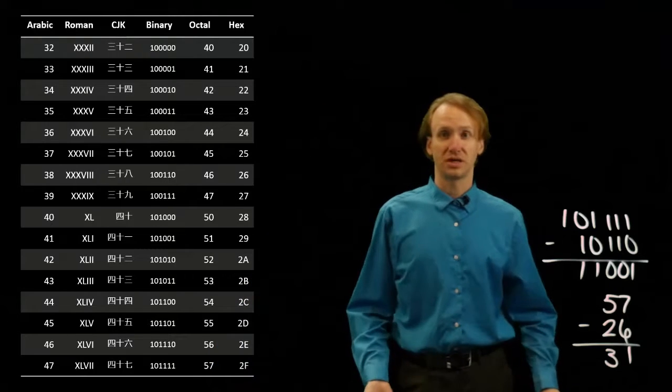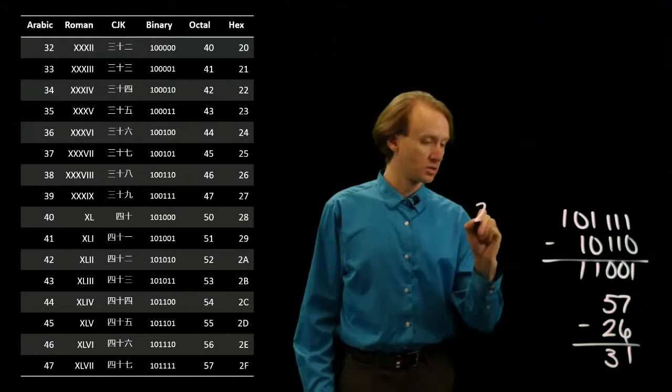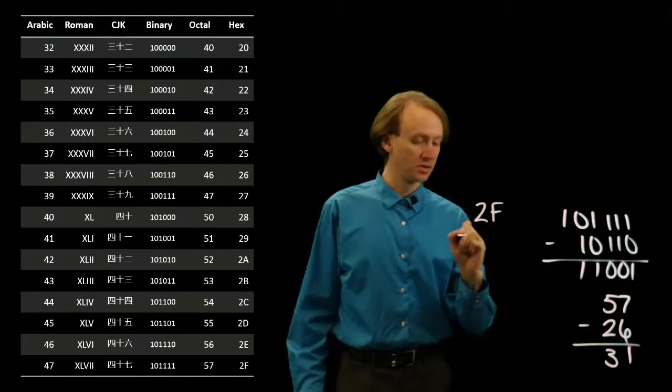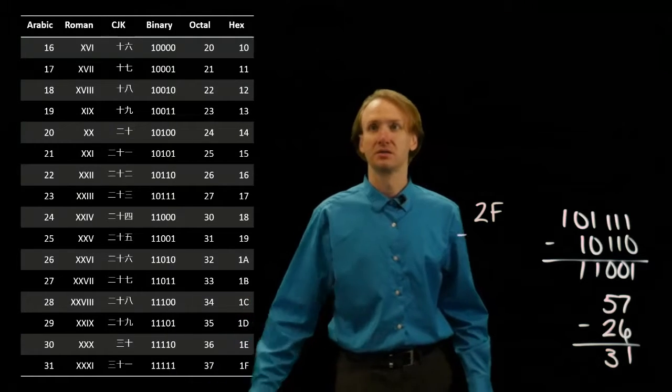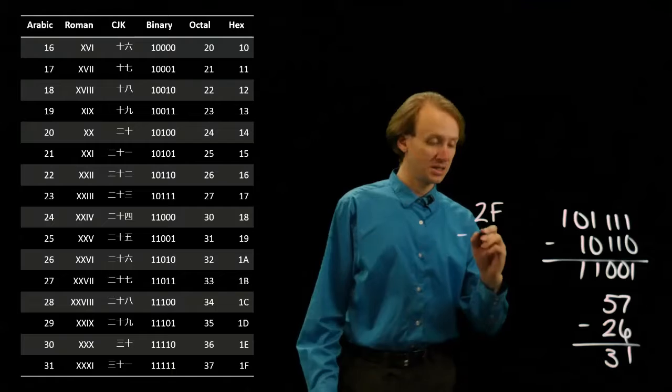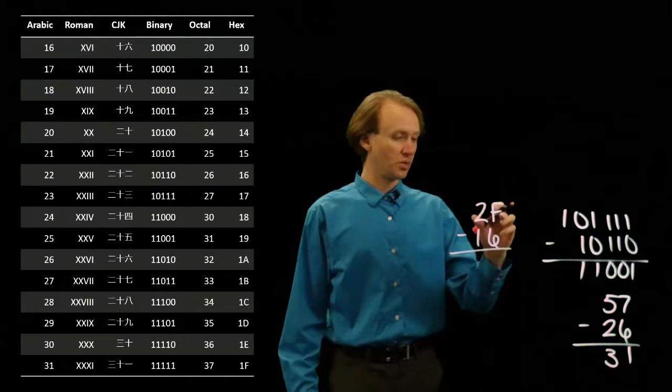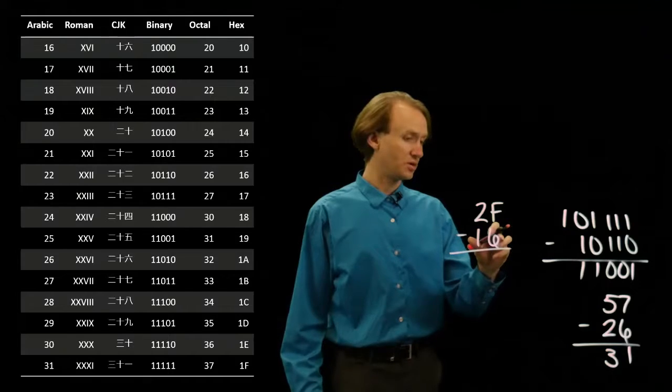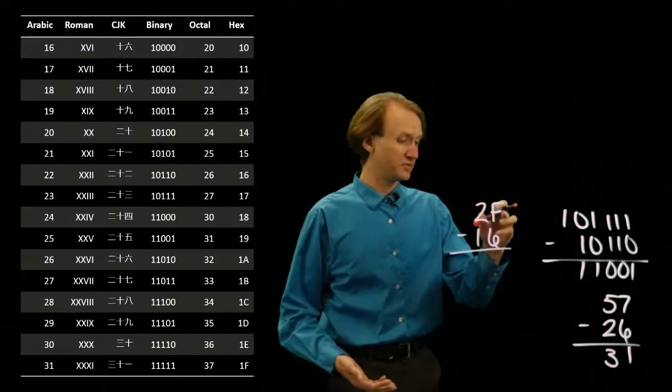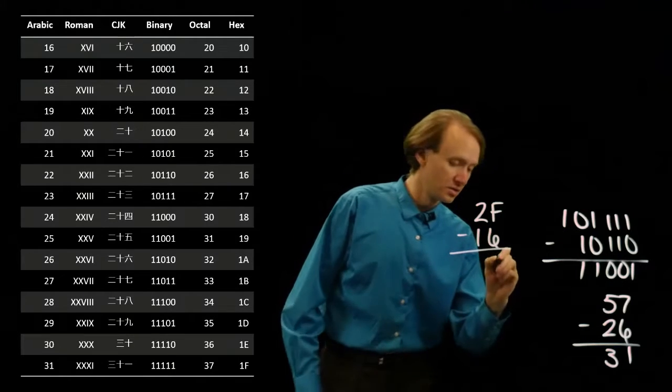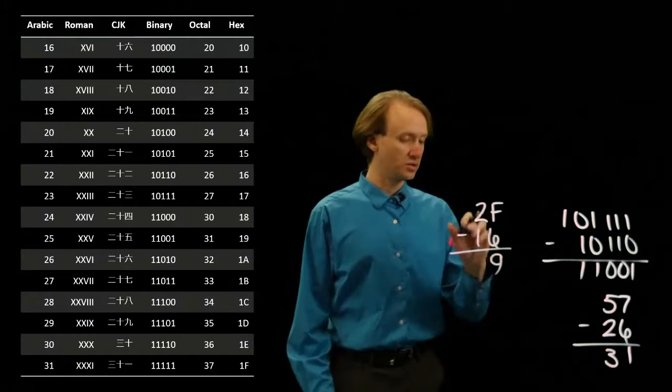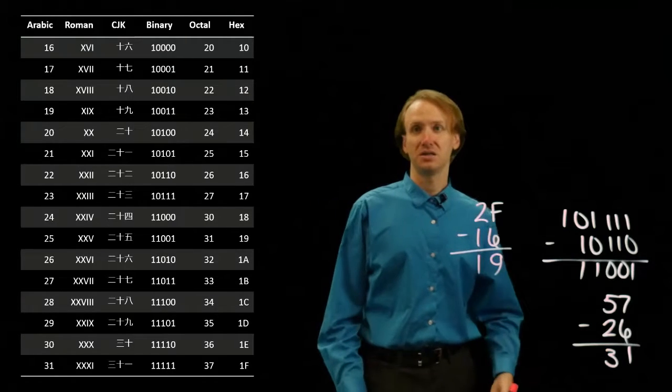I can do this again for hexadecimal, where I start with 2f and subtract 16. So f minus 6, well f is 15, 15 minus 6 is 9, then 2 minus 1 is 1. So that gives me 19.